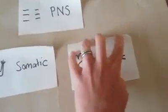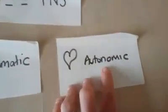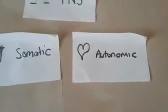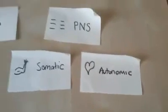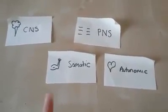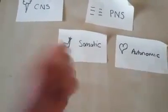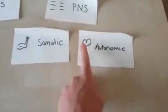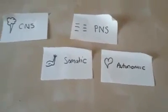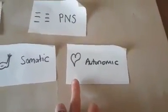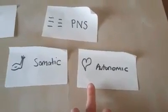Then we have the autonomic system, which is another branch of the PNS. The autonomic system is in charge of the stuff we don't control on a regular, minute-by-minute basis — which is just as well, because if we had to remember to make our heart beat, we'd have a few problems. We can voluntarily contract a bicep, but we can't tell our heart to stop beating. This covers the heart, circulatory system, lungs, organs, digestion, hormones, and energy systems.